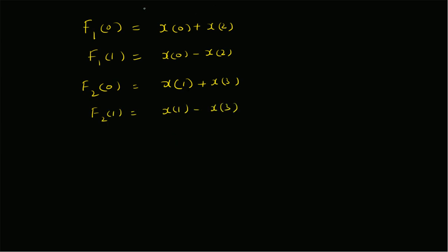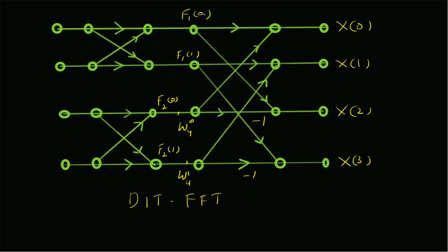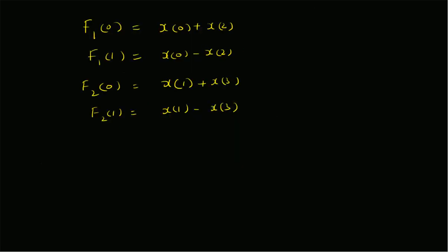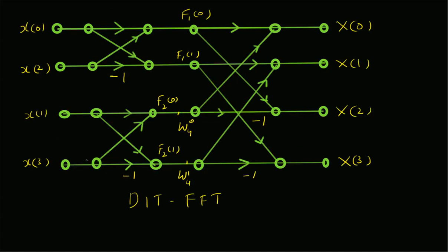Based on these results, we can go back to the butterfly diagram and directly relate F1[0] to x[0] and x[2] as their sum, F1[1] as x[0] minus x[2], and F2[0] as x[1] plus x[3]. That is how we construct the butterfly diagram for a 4-point DFT using the DIT FFT algorithm.